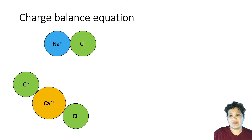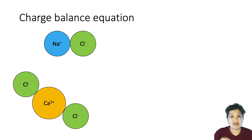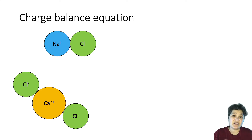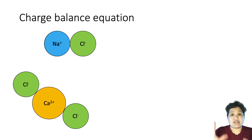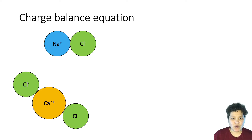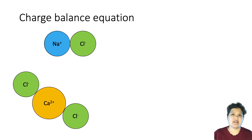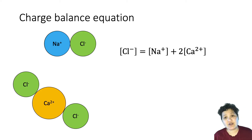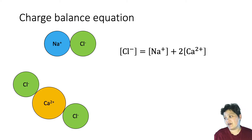When your teacher originally introduced ionic compounds, you were thinking on a molecular scale. Now we are thinking on a systemic scale — in terms of moles — and usually the way we account for everything is in terms of concentration: the molar concentration of a particular sort of ion.